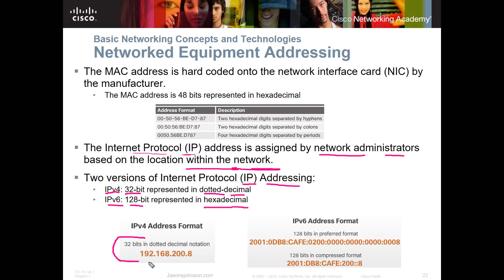The IPv4 format looks something like 192.168.200.8 — that's probably the one you're more familiar with. The v6 address format is 128-bit, written in hexadecimal, and uses hex-tets rather than octets. In IPv4 you have four octets, each being eight bits. In IPv6 you're writing these in hex-tets, and you have eight hex-tets totaling 128 bits long.